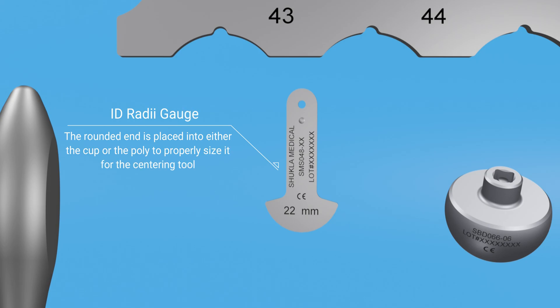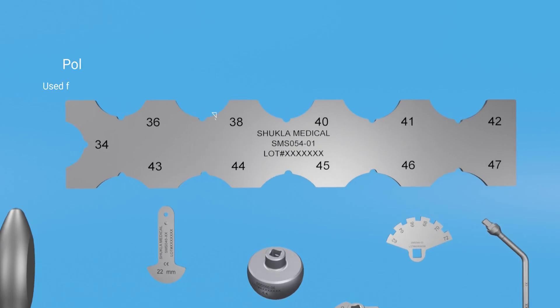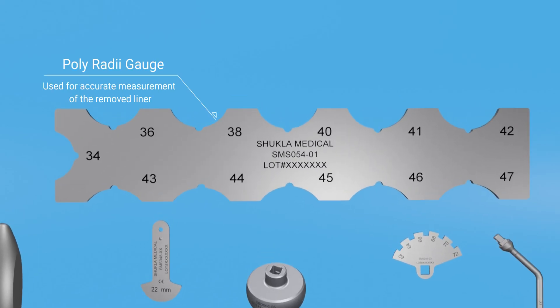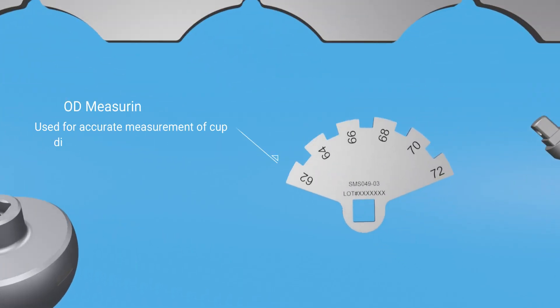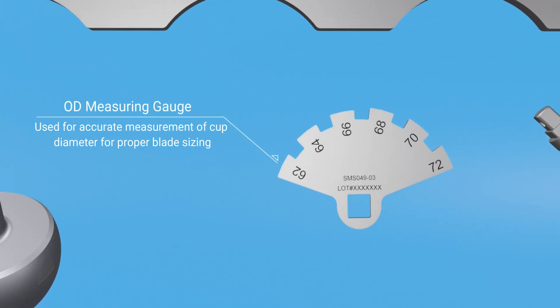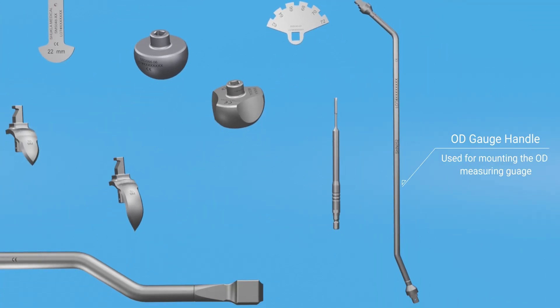The ID radii gauge is used for choosing the centering tool of accurate size. The poly radii gauge is used for accurate measurement of the removed liner. The OD measuring gauges ensure accurate sizing of starter and finisher blades. The OD gauge handle is used to mount the OD measuring gauges.